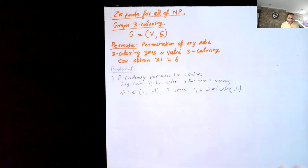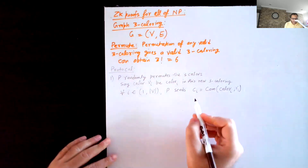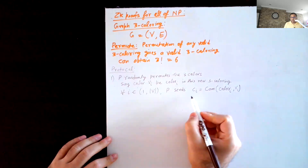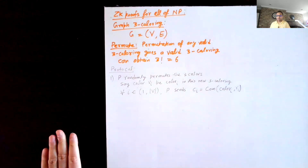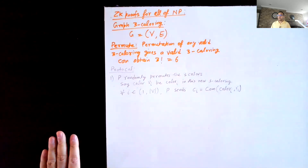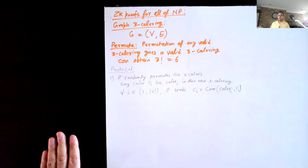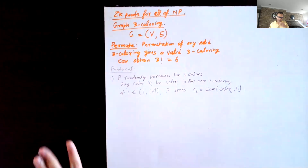Commitment schemes have two properties: the hiding property and the binding property. From the hiding property it follows that even though the verifier has received commitments to all the colors, the verifier has no idea what the colors are. So at this point, the verifier learns nothing about the three-coloring of the graph.